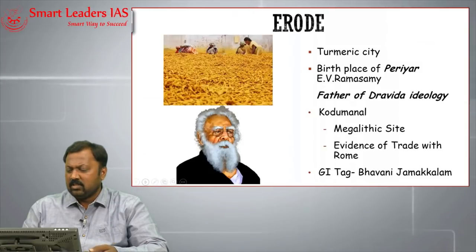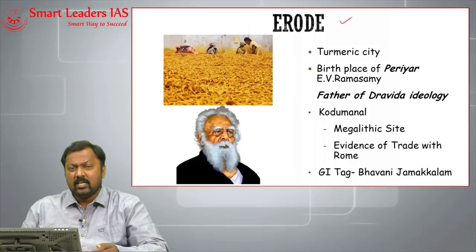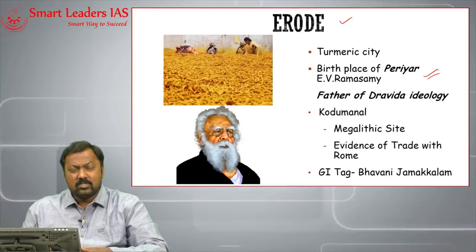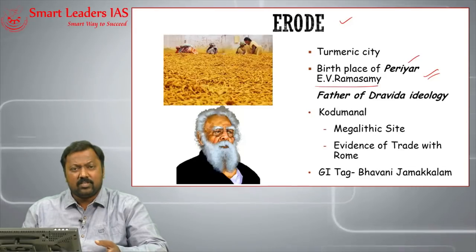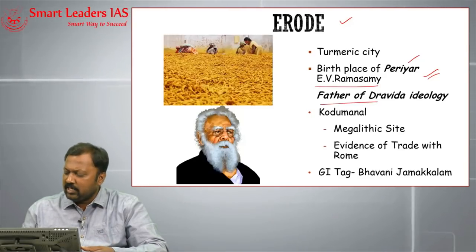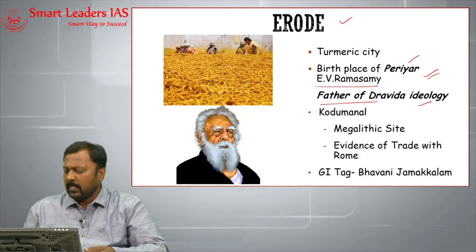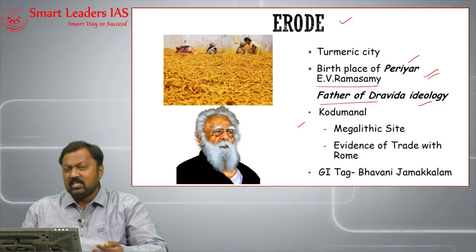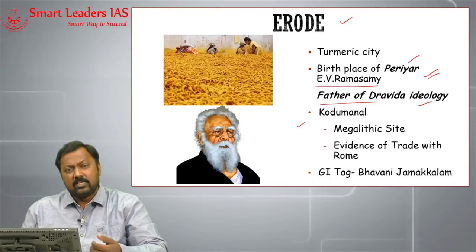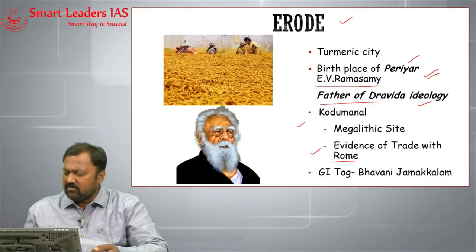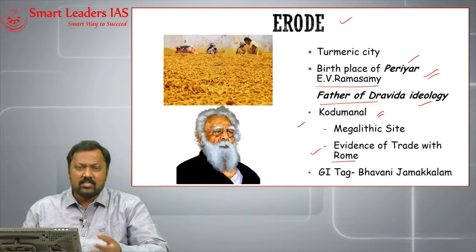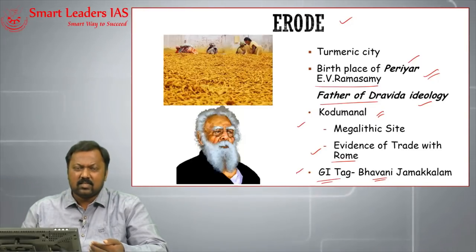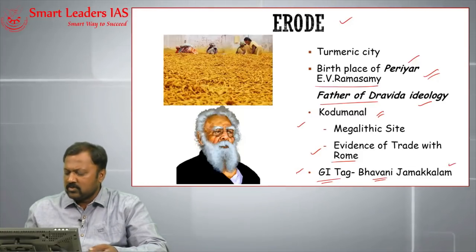Erode is referred to as the turmeric city and is located in Tamil Nadu. It is associated with the birth of E.V. Ramasami, fondly referred to in Tamil Nadu as Periyar, who is considered the father of the Dravidian ideology. Erode also has a recent excavation called Kodumanal — an important megalithic site associated with ancient trade and commerce with the Romans. Erode has received a GI tag for Bhavani Jamukhalam, as Bhavani is a city located near Erode.